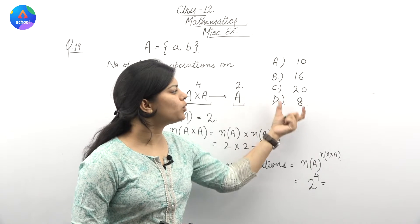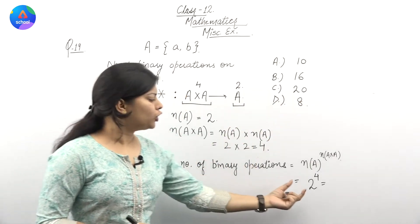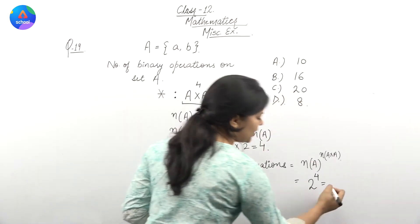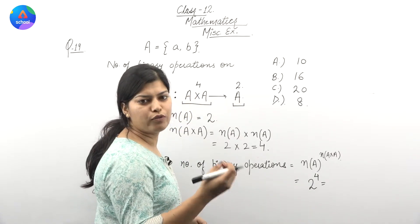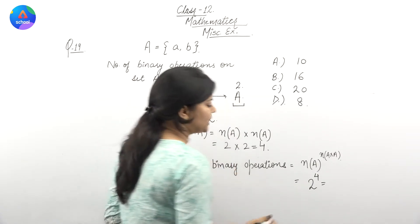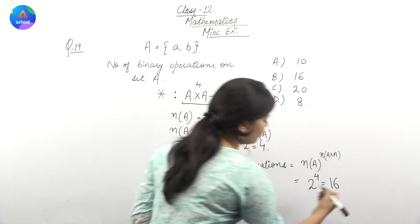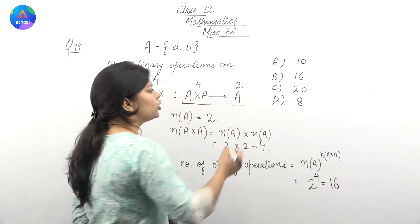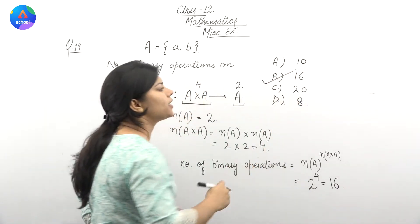Now we see that 2 raised to 4 is not in the options, so let's simplify this. What value will we get? 2 to the 4: 2 times 2 is 4, 4 times 2 is 8, 8 times 2 is 16. So 2 raised to 4 equals 16. What is our answer? Our correct answer is B.